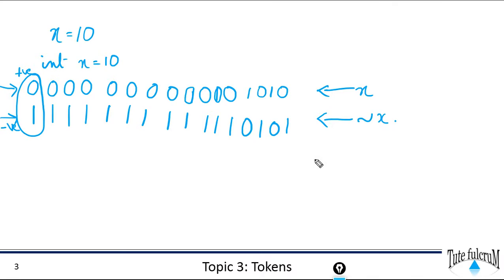So for this we will find the 1's complement of NOT of x. So this is the 1's complement. So 1's complement is toggling the bits. So this becomes 0 then 1, 0, 1, 0. Remaining all bits will become 0.